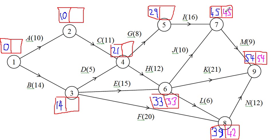Number five is much easier - we've got to be at seven by forty-five, I takes sixteen, so we must be at five by twenty-nine ready to start I. Four is next. We've got to be at six at thirty-three, so we must leave here at twenty-one. That's all we need - twenty-one is the time we have to be there to get to six by thirty-three. It's also the time we have to leave to get to five by twenty-nine, because G takes eight.